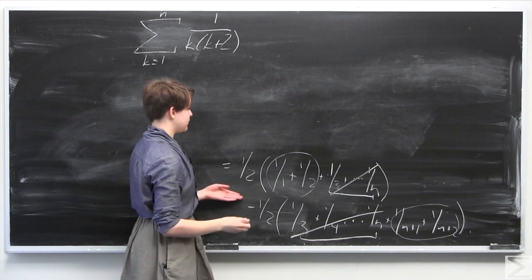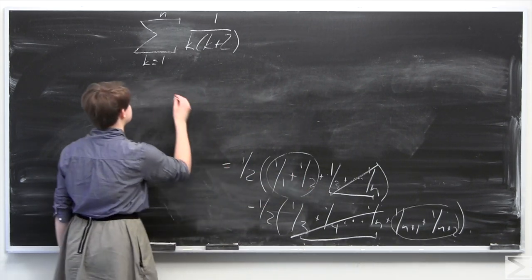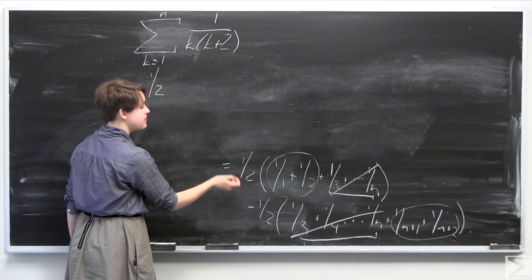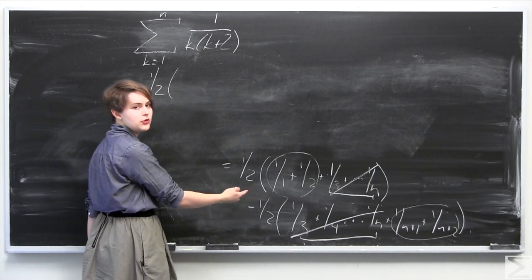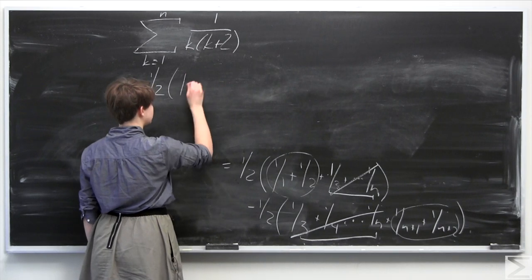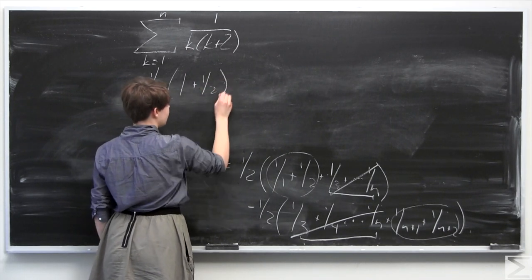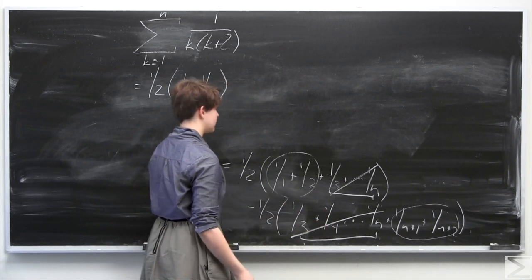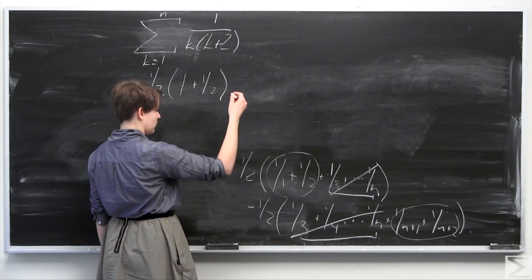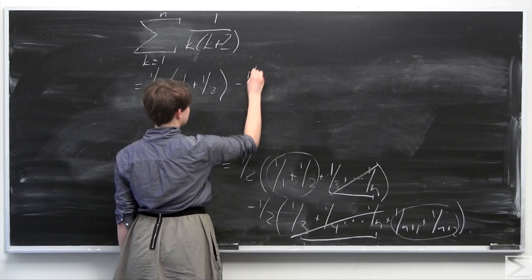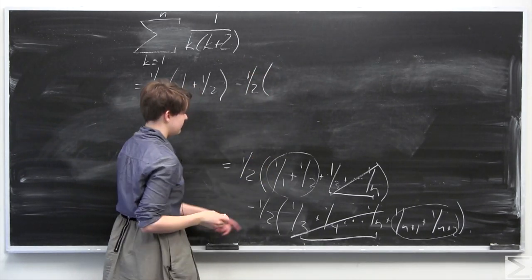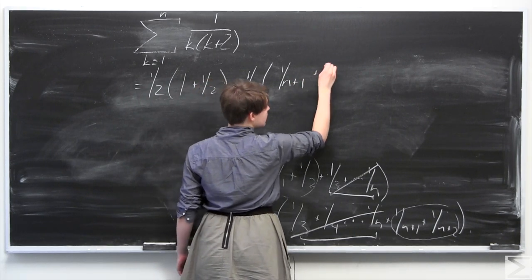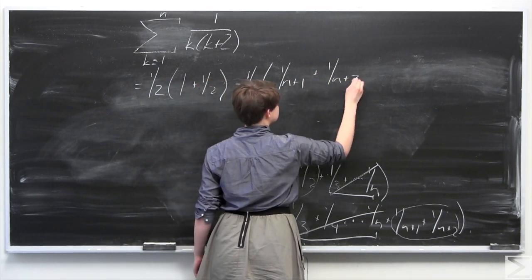Rewriting with the cancelled terms removed: we have 1 half times 1 plus 1 half, which is 1 half times 3 halves equals 3 fourths, minus 1 half times 1 over n plus 1 plus 1 over n plus 2.